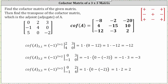And now for the third row. Cofactor A sub three comma one is equal to negative one raised to the power of three plus one times the corresponding minor. If we eliminate row three, column one, the two by two determinant has a first row of two, three and a second row of four, zero. The fourth power of negative one is one. The determinant is zero minus 12, or negative 12. One times negative 12 is negative 12, the entry in row three, column one.